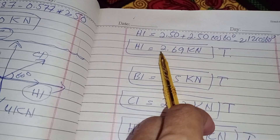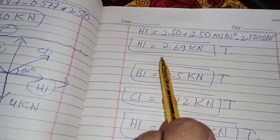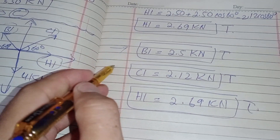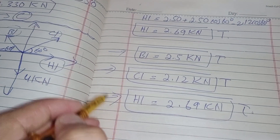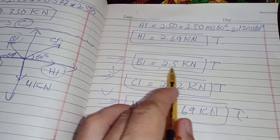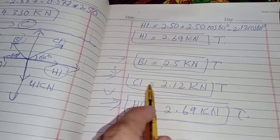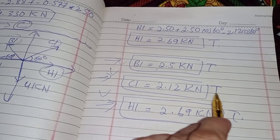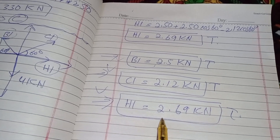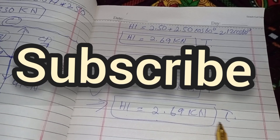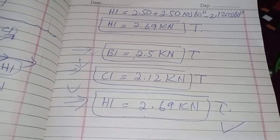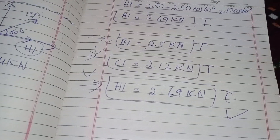So the required forces in the members are: BI = 2.50 kilonewtons in tension, CI = 2.12 kilonewtons in tension, and HI = 2.69 kilonewtons in tension. Thank you very much.